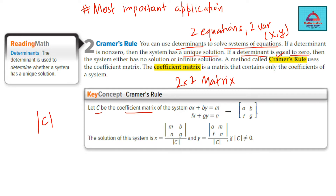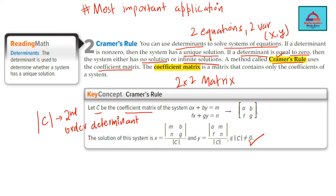First you calculate the determinant of A, which will be a 2×2 second-order determinant, and you look at its value. If this comes out to be zero, we stop and say that it has no solution or infinite solutions. If it is non-zero, only then we proceed for a unique solution. This method called Cramer's rule uses the coefficient matrix, so the coefficient matrix is very important.